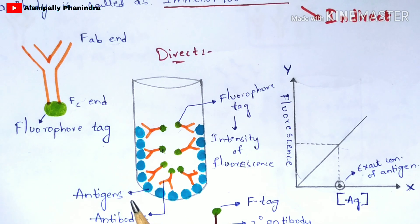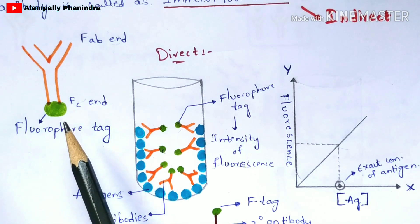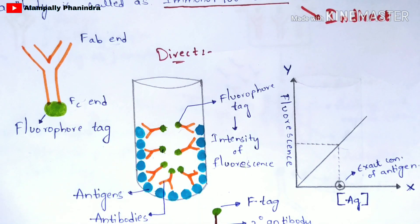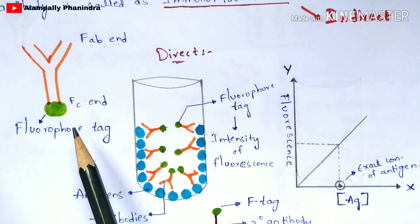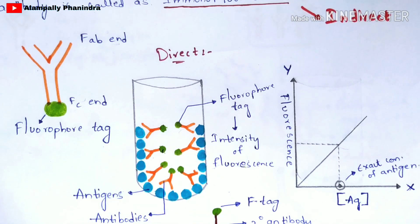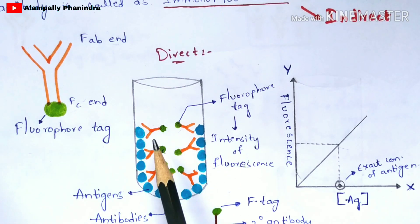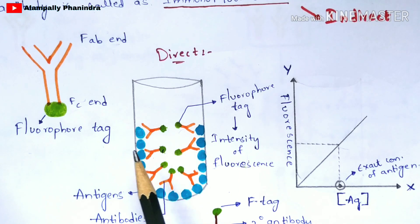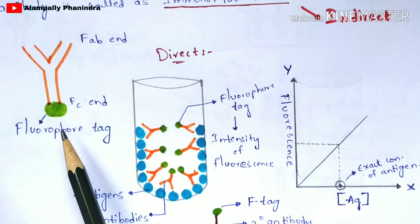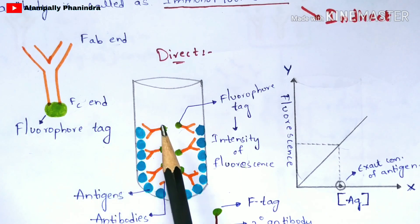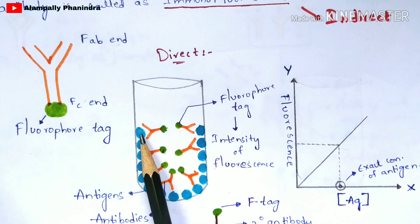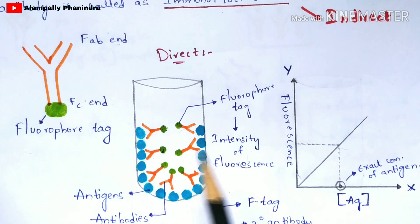Now you are going to pour all of the antibody solution, which consists of the fluorophore tag, into this test tube. As you place the antibodies which have the fluorophore tag, the antigen-antibody interaction occurs — the antibody gets attracted to the antigen and forms the antigen-antibody complex. Make sure the fluorophore tag is present, as it was attached at the FC end of the antibody initially.